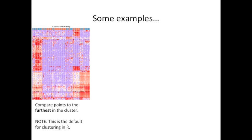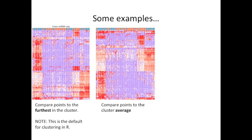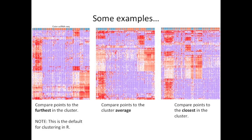Here are some examples from the second heatmap that I showed you. Here we're comparing the points to the furthest in the cluster. This is the default setting in R. Here's what the clustering looks like when we compare points to the cluster average. As you can see, the major blocks of clustered genes and samples have been retained even though they've been reordered. Here's an example where we compare points to the closest point in the cluster. Again, the major features have been retained but are now reordered again.